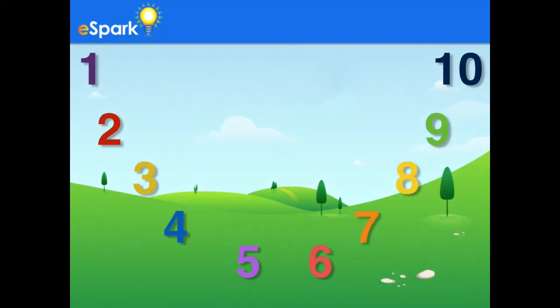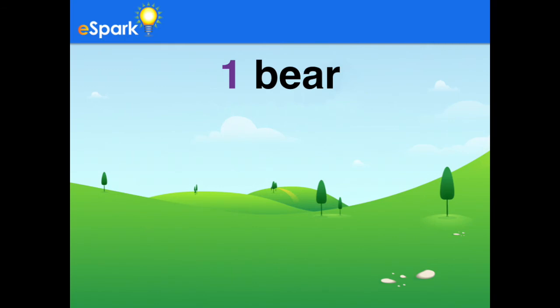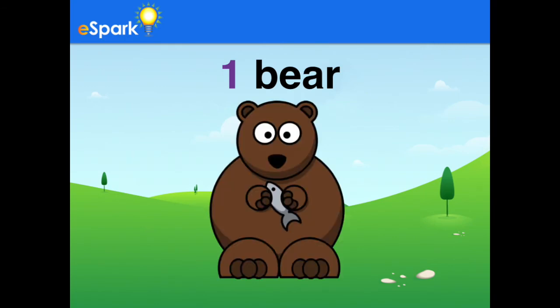Each number, like 1, tells you how many there are of something, like apples, or snakes, or planes, or in this case, bears. For example, if I saw one bear, I would know that there's one bear. Not two bears, or zero bears, but one.